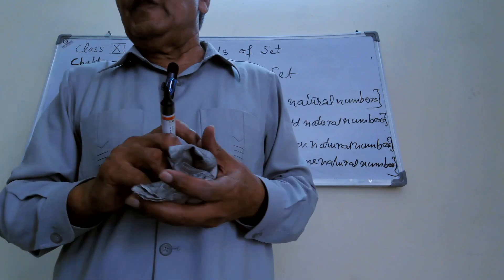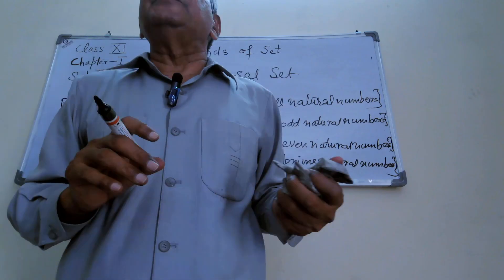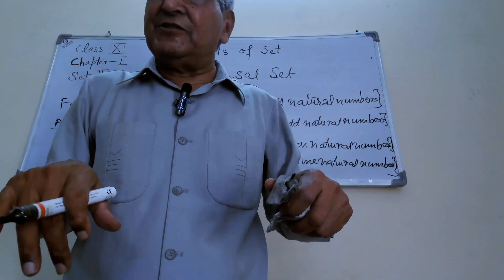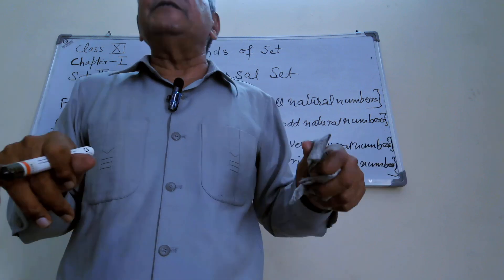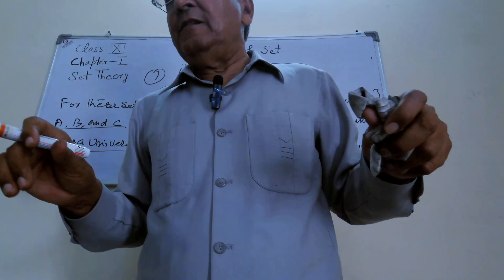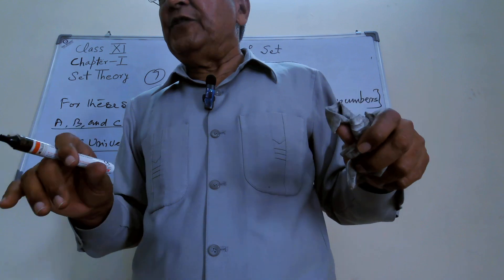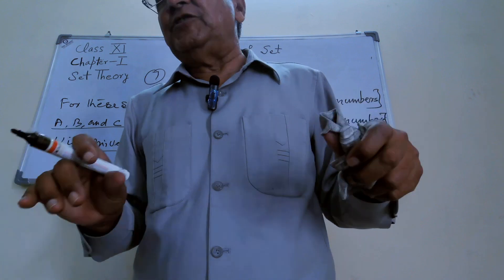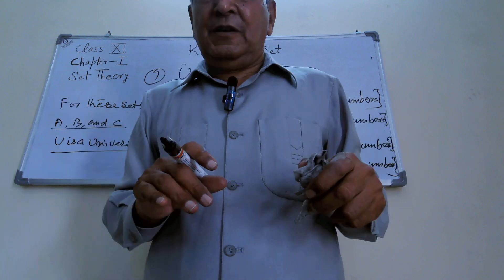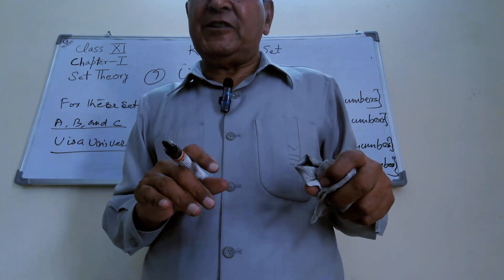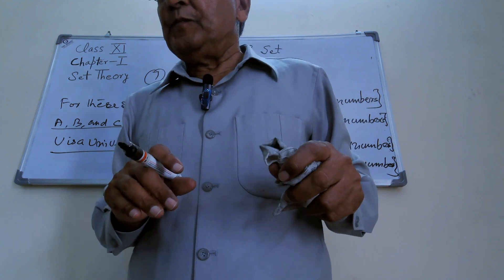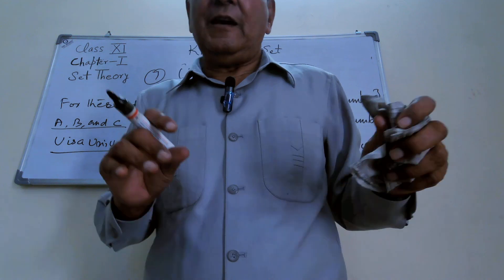So these are the kinds of sets. All the kinds are very important. I have tried to make clear all the definitions with the help of examples. I think you have understood, and later on I will take the next part of this set theory. Wait for a while. Thank you.